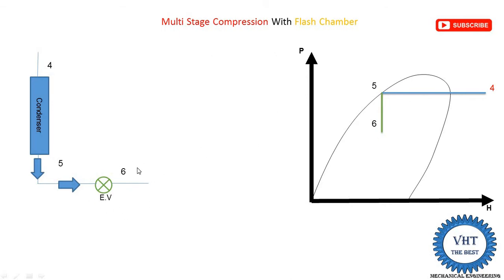At point six on the p-H diagram, both liquid and vapor are present — point six falls between the liquid line and vapor line. If we supply vapor into the evaporator, it has less ability to absorb heat because it is already in vapor state. Liquid has more ability to absorb heat, so we try to supply only liquid into the evaporator. By supplying only liquid, we increase the refrigerating effect of the system and thereby increase the COP.